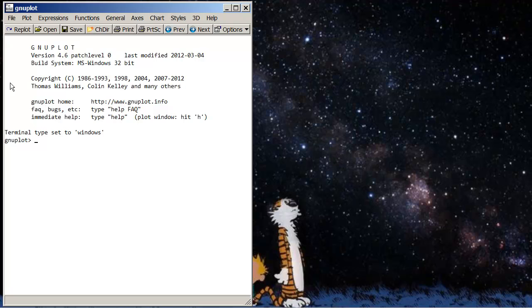So basically, I type in set parametric, press enter, and you'll see it says dummy variable is T for curves, U or V for surfaces. Since we're going to be doing three-dimensional plots, we're going to be using U, not V just yet. We're just going to be using U. Don't use T.